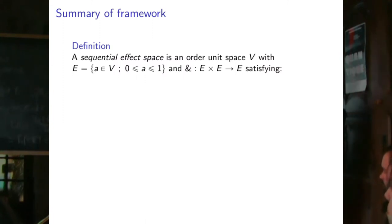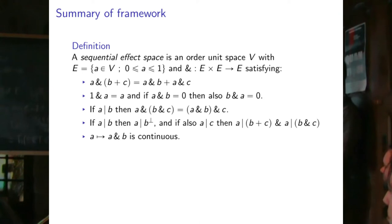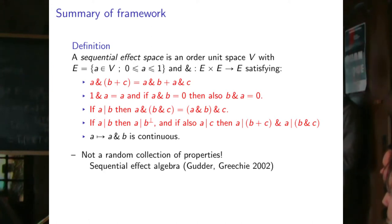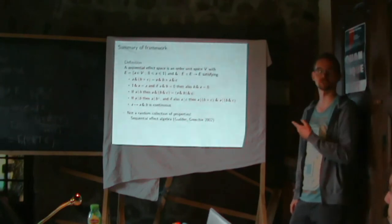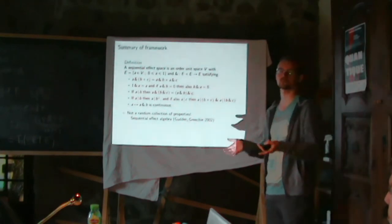Summary: a sequential effect space is an order unit space with an operation on effects satisfying all these axioms. This is not a random collection — the first four axioms define a sequential effect algebra as introduced by Gudder and Greechie. I only added the continuity condition. The fact that these axioms were originally defined just for doing interesting mathematics — not to reconstruct quantum theory — is already a sign that this is quite a natural set of properties.